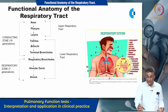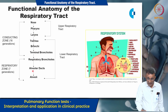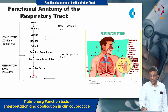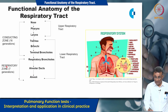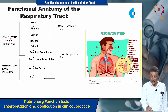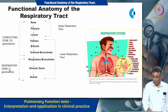Anatomically, the respiratory tract comprises the nose, pharynx, larynx, trachea, bronchi, terminal bronchioles, respiratory bronchioles, alveolar ducts, and the alveoli. From a functional or physiological point of view, you have a conducting zone and a respiratory zone. The first 16 generations of the airways comprise the conducting zone, and the remaining 7 generations make up the respiratory zone.